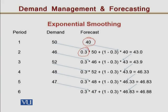One important thing to note is that simple exponential smoothing can only forecast one period into the future. For example, for period 5 we have the actual demand of 47 and a forecast of 46.83 already available, so we can calculate the forecast for period 6. But since the actual demand for period 6 is not available, we cannot forecast period 7. So this method can only forecast one period ahead.